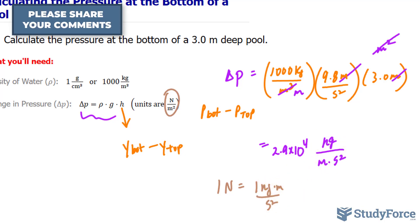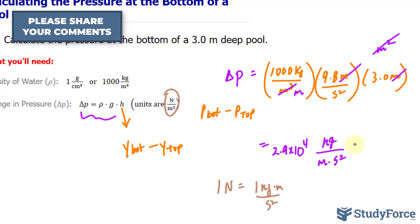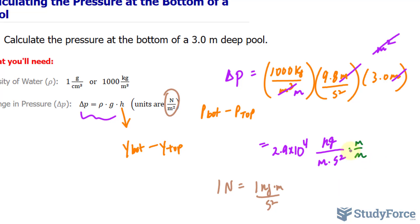Now this is a little bit different than what we have here. So what I will do is use a little math trick and multiply the top and the bottom by meters. And what this will do is give us kilogram meter per second squared, which represents a newton, and meters squared at the bottom, which is what we're looking for, in a unit of pressure.